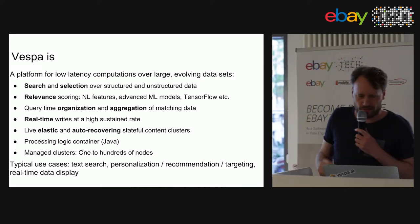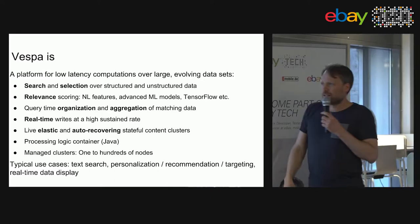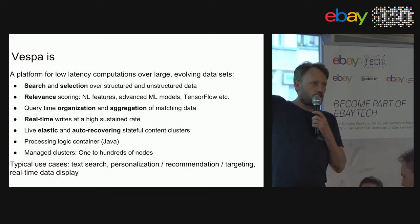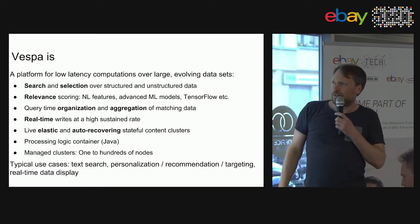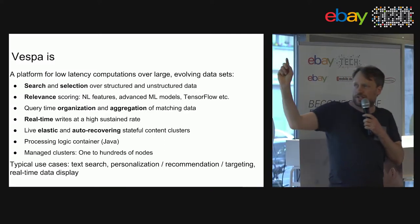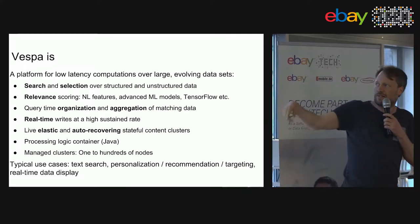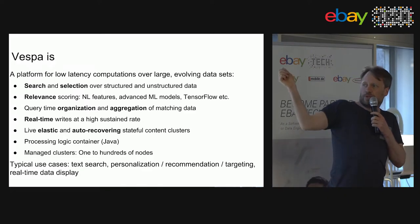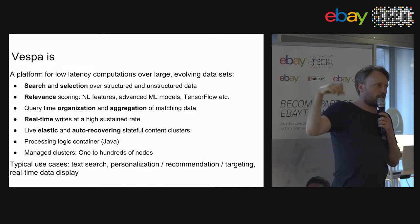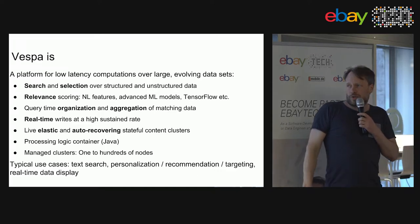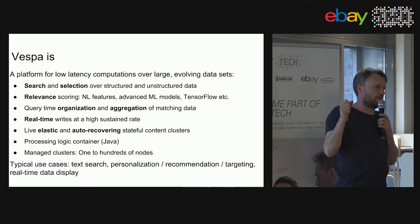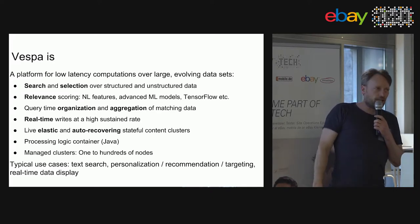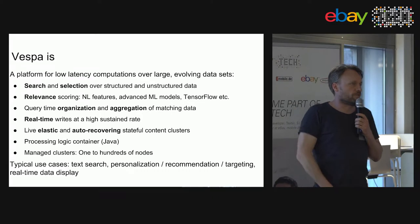Vespa is also used for recommendation and personalization. It allows you to do search over unstructured textual data, selection over structured data, and combinations of the two. It does relevance scoring, natural language processing, advanced ML models including TensorFlow, and query-time grouping and aggregation — all while sustaining a high write rate, typically a couple of thousand writes per second per node.